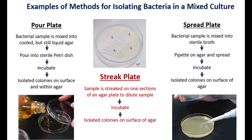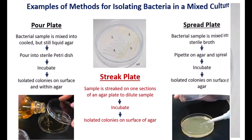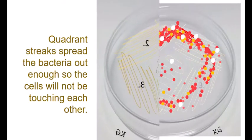There are several methods for isolating individual microbes from a mixture, but the method many microbiologists use is called a quadrant streak plate. The idea here is that if you spread the bacteria out enough on the plate, then the cells will not be touching each other.